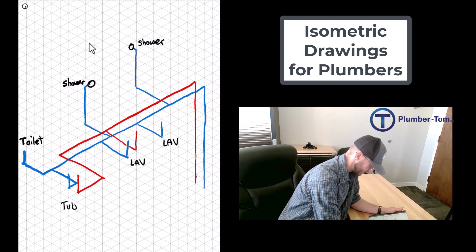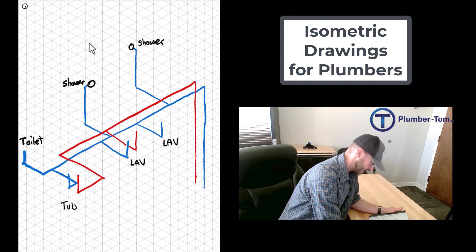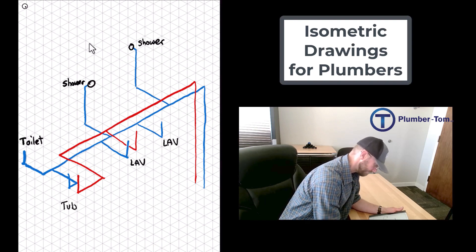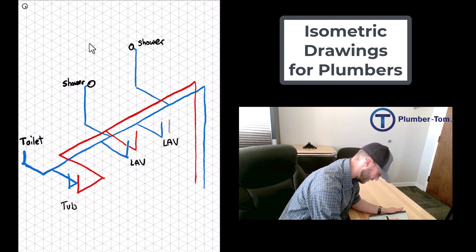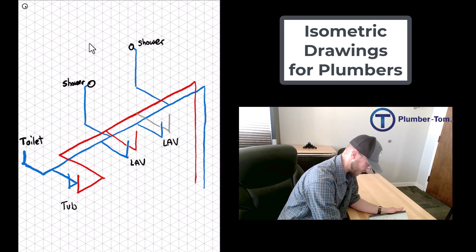I'm branching over and crossing that one. My lines aren't perfectly straight, they cross a little bit, but you get the idea. Here's another lav coming up in the cabinet, branching off of there.